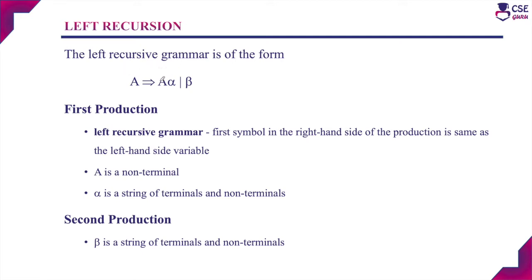The general form of a left recursive grammar is A derives A-alpha or beta. In the production A derives A-alpha, the first symbol on the right-hand side is the same as the left-hand side variable. Whenever this occurs, that grammar is a left recursive grammar. Here A is a non-terminal, alpha is a string of terminals and non-terminals, and beta in the second production A derives beta is also a string of terminals and non-terminals. The second production is not left recursive.